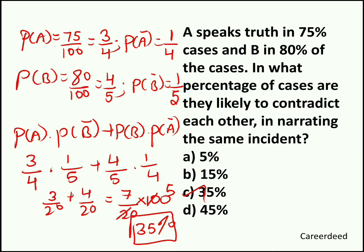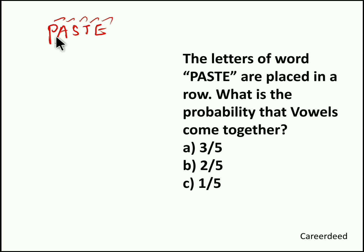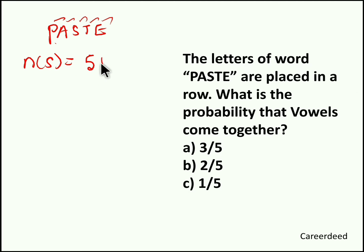Hope you understood the concept. Moving to our fourth question. The letters of the word PASTE are placed in a row. What is the probability that the vowels come together? This question is a type of permutation. Here we have the word PASTE — totally 5 letters with no repetition. So in how many ways can we arrange the letters of the word PASTE? Since there is no repetition, the total number of sample space is 5 factorial.